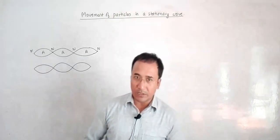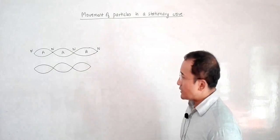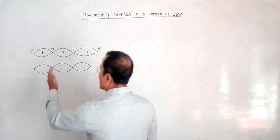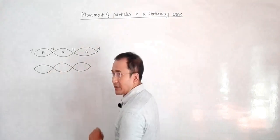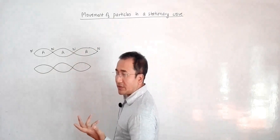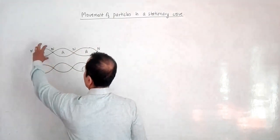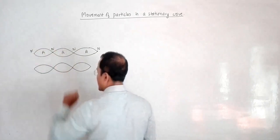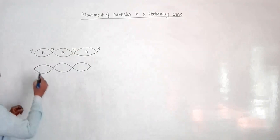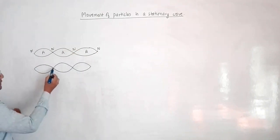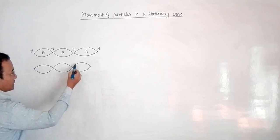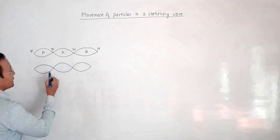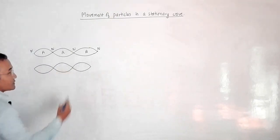It is a different thing in a stationary wave compared to the progressive wave. In a progressive wave, you feel like the waves are moving this side or that side. But here you do not feel like that — you feel as if it is a loop, it is a loop, it is a fixed point staying there. But what actually happens is that when the particles in one loop are at the top, they will be at the bottom in the adjacent loop, and vice versa.